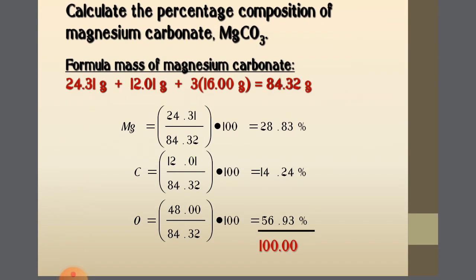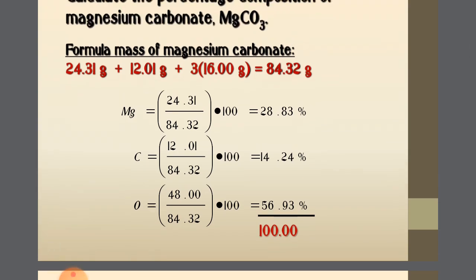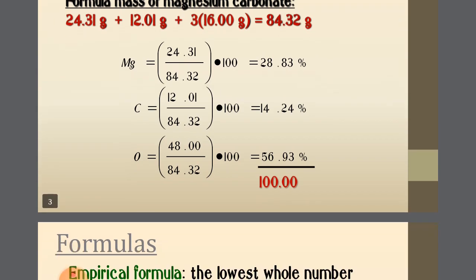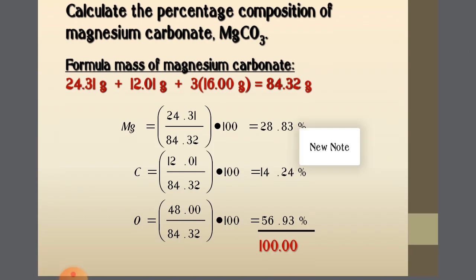Another example: let's find the percentage composition of magnesium carbonate, MgCO₃. The total mass — Mg: 24.31, C: 12.01, O: 3×16 = 48. So molecular mass = 48 + 12.01 + 24.31 = 84.32. Percentage of Mg = 24.31/84.32 × 100 = 28.83%. Carbon = 12.01/84.32 × 100 = 14.24%. Oxygen = 48/84.32 × 100 = 56.93%.